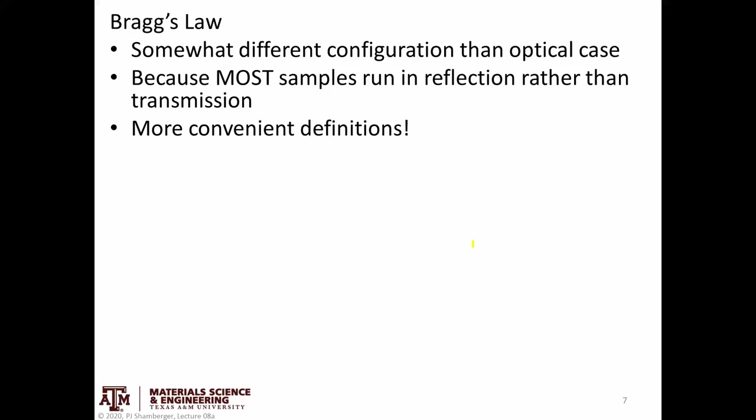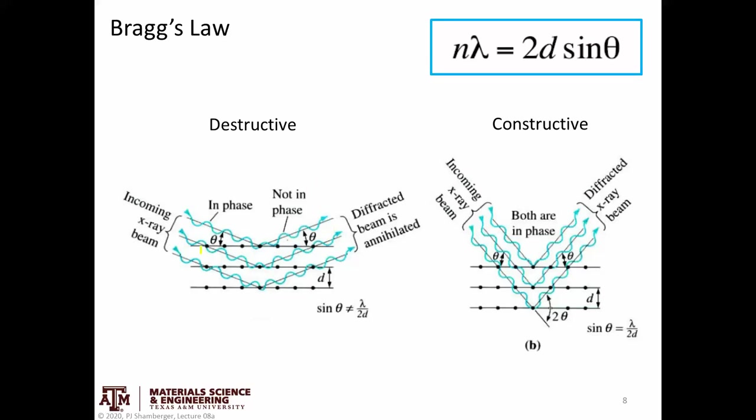Bragg's Law is basically just the extension of optical diffraction to a crystal structure. It's a little bit different configuration than in the optical case generally, and so there's a slightly different relationship. That's just because most of the samples were not shining x-rays through the sample. Usually we're bouncing x-rays off the surface and looking at the diffraction reflections that are coming off. So this is a slightly more convenient definition, although I will say that in some samples we have the same configuration that we think about with the optical case, that is where you're shining x-rays through the sample.